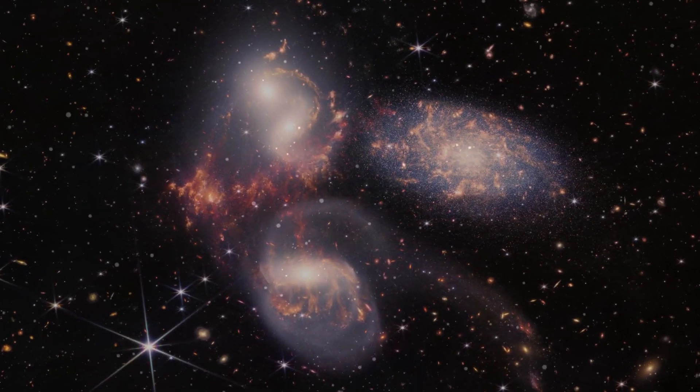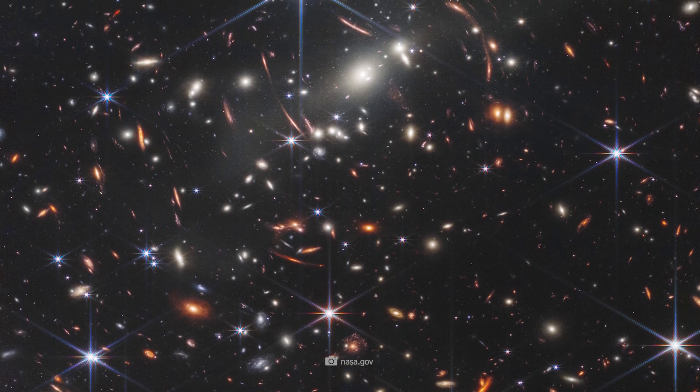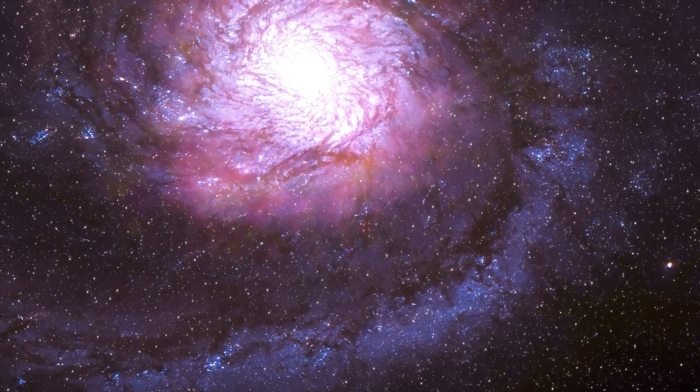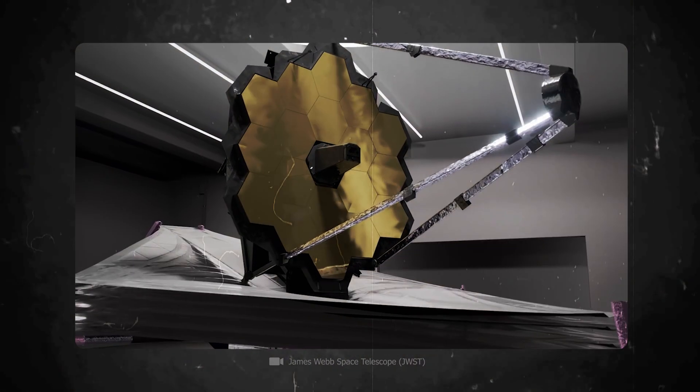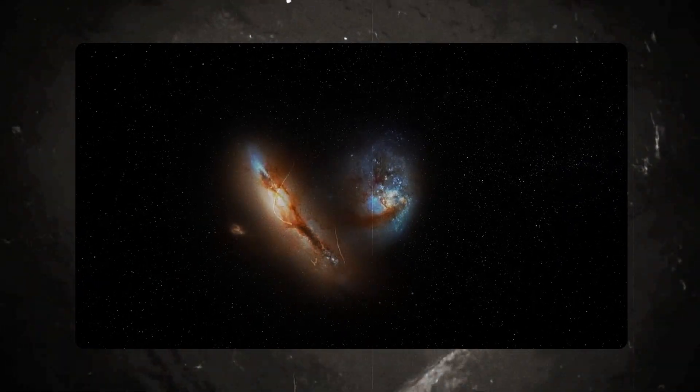James Webb also showed only a small section of the early universe on his deep image. If the galaxies are confirmed, we must continue to assume that there were as many galaxies in the universe 13.6 billion years ago as there are today. The data from the Webb telescope thus impressively show that the early universe does not look much different from our universe today.